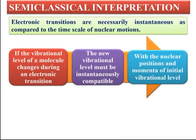If the vibrational level of a molecule changes during an electronic transition — that is, if the electronic transition is taking place from the ground to the excited state and vibrational energy levels are changing, which is a vibronic transition — the new vibrational level must be instantaneously compatible with the nuclear position and momenta of the initial vibrational level. So the vibrational levels must be compatible in terms of the nuclear position and the initial momenta of the initial vibrational level.